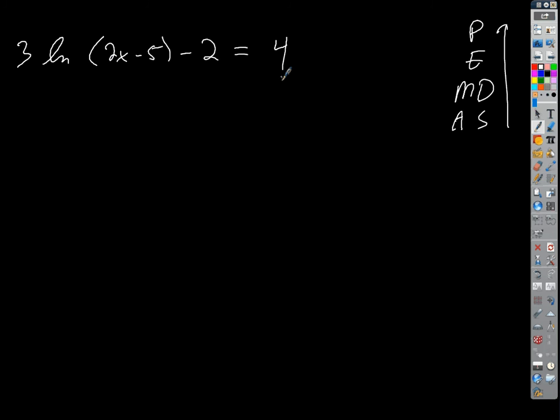So what if we had something like 3 times the natural log of 2x minus 5 minus 2 equals 4? What would you do to solve for x here? When we isolate variables, we just reverse order of operations. So what are you going to do first? Add 2. Add 2, right. We're going to add or subtract loose terms, things that are separate terms from the x. So we add 2 to both sides. That gives us 3 times the natural log of 2x minus 5 equals 6.